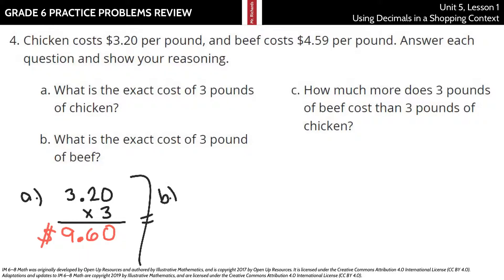In B, what is the exact cost of 3 pounds of beef? We have $4.59 times 3 this time. And 3 times 9 is 27. 5 times 3 is 15, plus that 2 is 17. 4 times 3 is 12, plus that 1 is 13. And of $13.77 for beef.